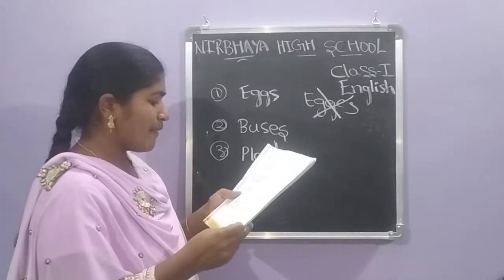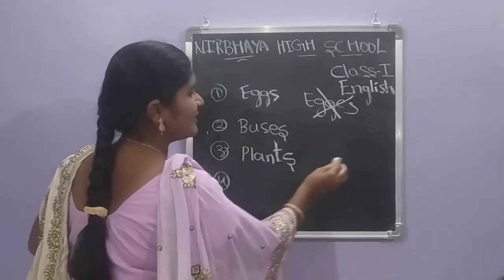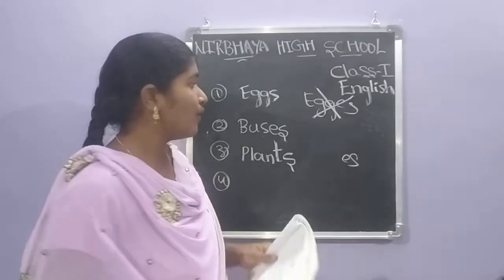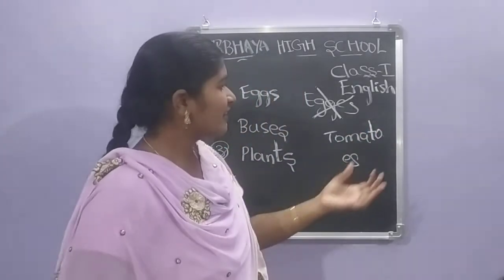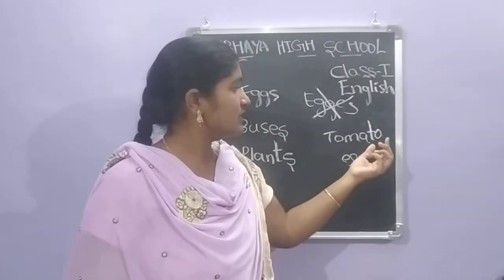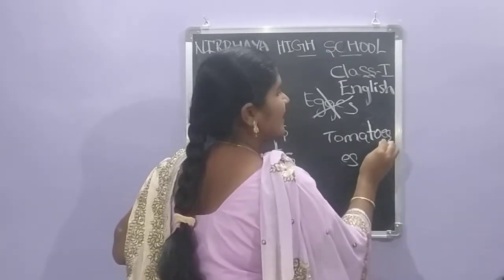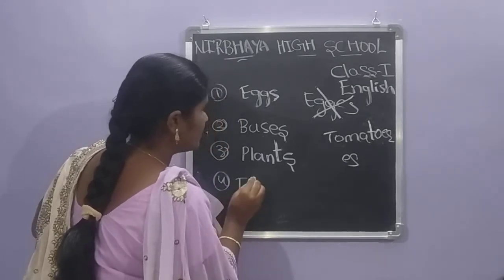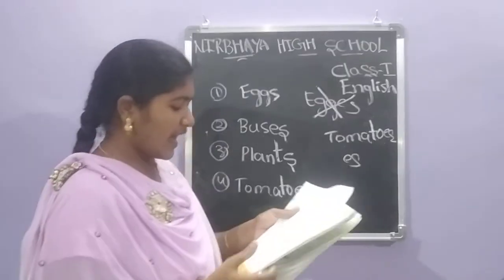Next one: Tomatoes or tomato? For 'tomato' — T-O-M-A-T-O — the word ends with O. Which letter should we add? We are adding ES. So the plural is tomatoes — T-O-M-A-T-O-E-S. ES we have to add.